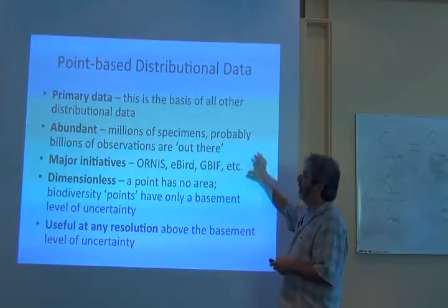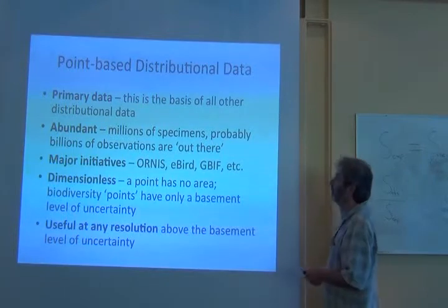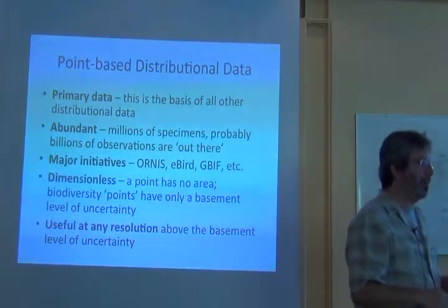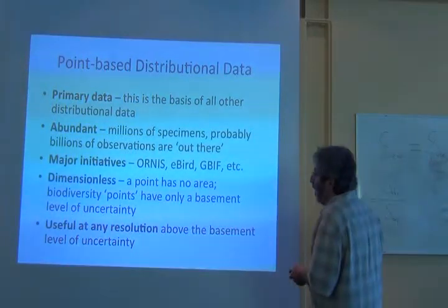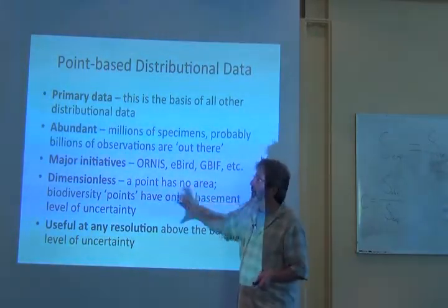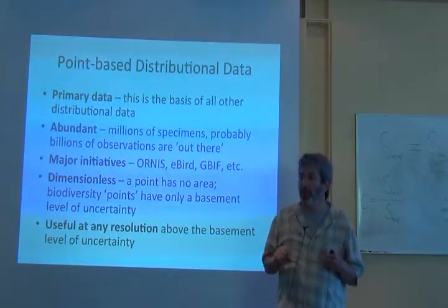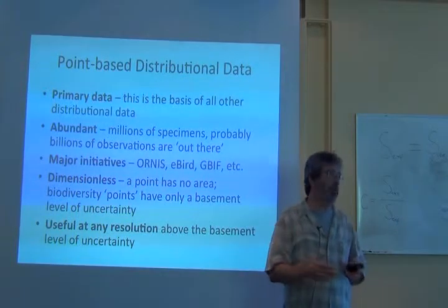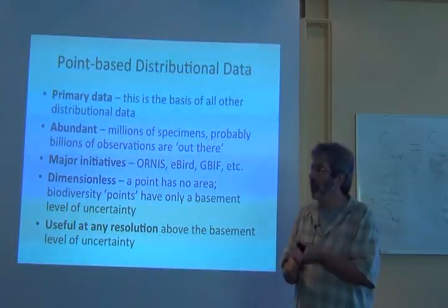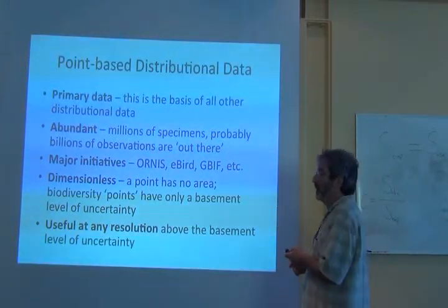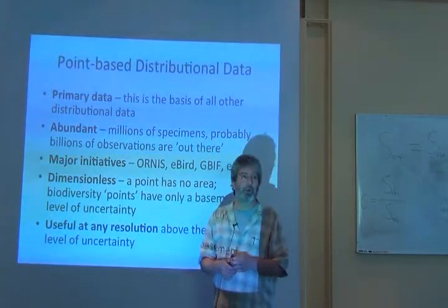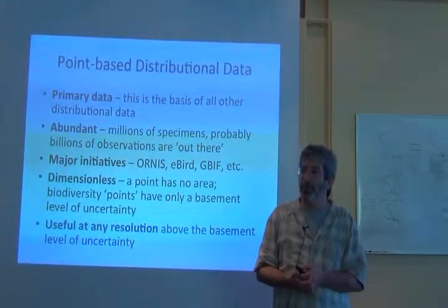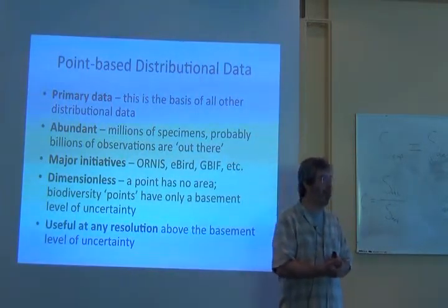The neat thing about the primary data is that it's very abundant — millions, hundreds of millions of data points are already accessible, probably on the order of five to ten billion specimens have been collected. And the really interesting and useful characteristic of points is that they're essentially dimensionless. Those point data have no area and they're going to be useful at any spatial resolution that's coarser than the precision with which the point was determined. So unlike that map, we can use the point for a really fine application, like in the Fynbos, or we could use it at a continental scale.